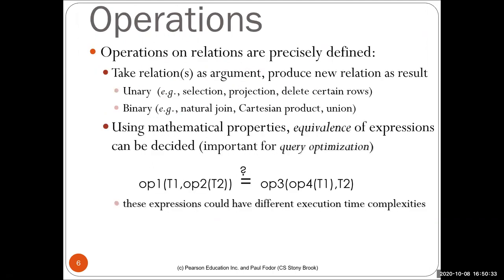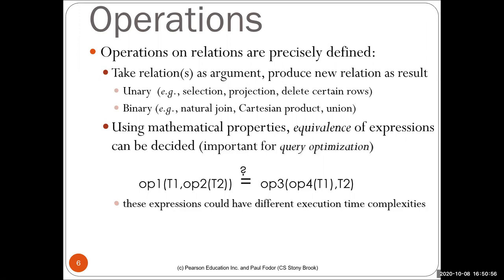There are many operations that apply to relations, and they are precisely defined. Next class we'll talk about unary operations like selection — selecting rows that satisfy some logical condition — and projection, which means taking all the attributes and projecting onto a subset. There are also binary operations like natural join, Cartesian product (every row in the first table combined with every row in the second), and union of two tables with exactly the same attributes.